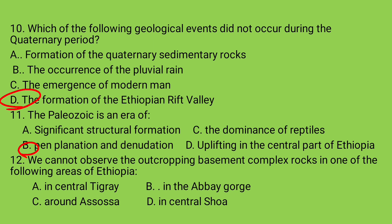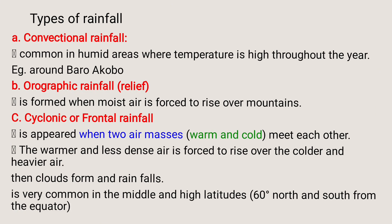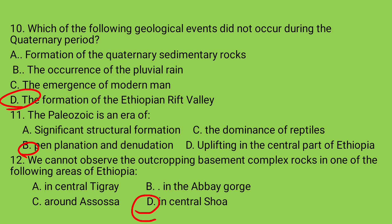Question number twelve: We cannot observe the outcropping basement complex rocks in which one of the following areas of Ethiopia? A) In central Tigray, B) In the Abai Gorge, C) Around Asosa, D) In central Shewa. Thank you for your attention — prepare yourself for your remedial exam with GEO Lesson 17.